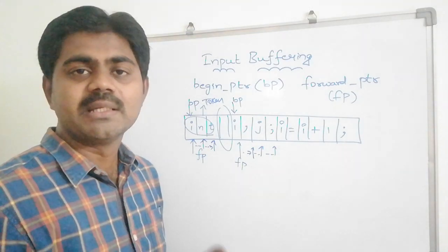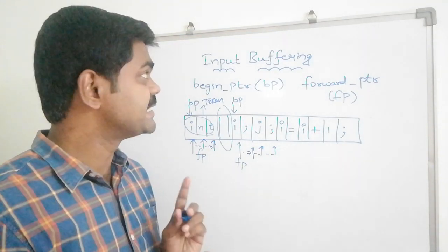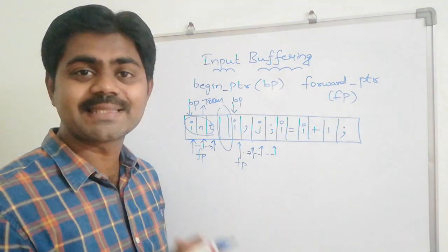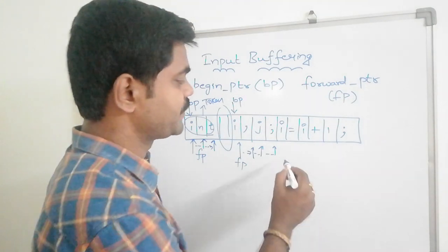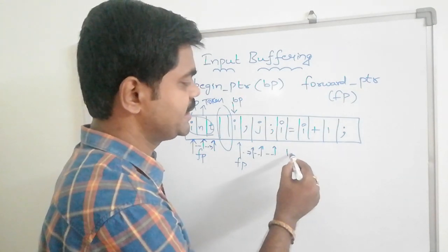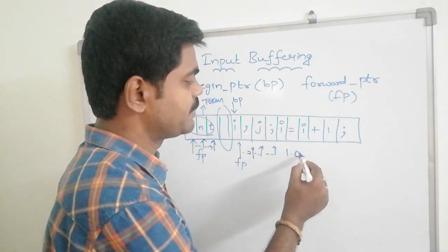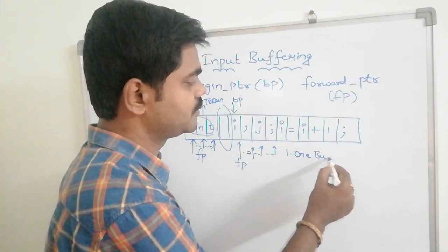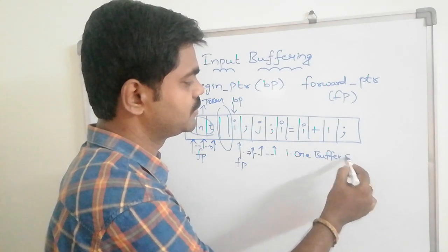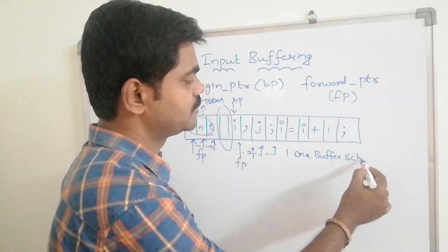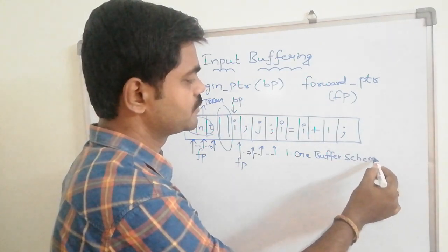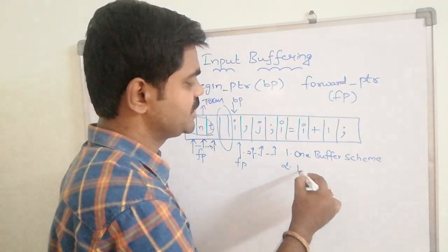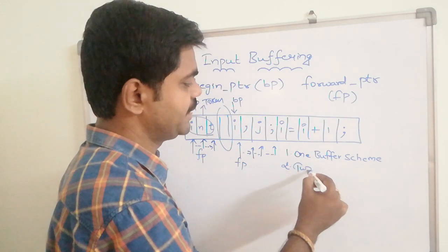In input buffering, we have two types of schemes: the first one is the one buffer scheme, and the second one is the two buffer scheme.